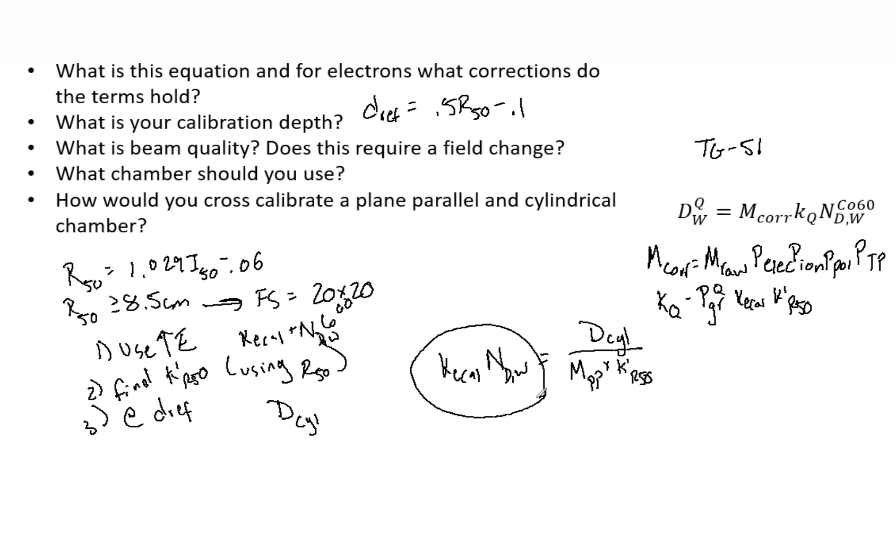We need this factor to do TG-51 with the plane parallel chamber. We're going to find the dose with the cylindrical chamber, then the reading with the plane parallel. And then remember, we found K-prime R-50 using the R-50 and some tables and things within TG-51. You know all three of these values, you find that, and then you were able to do TG-51.